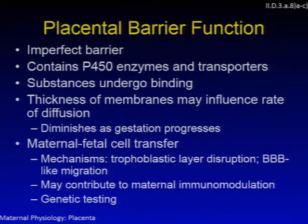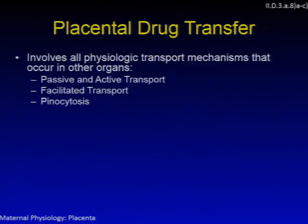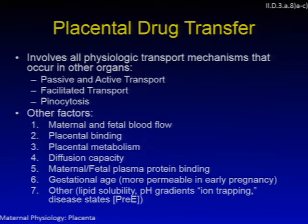Cell-free fetal DNA in maternal plasma has facilitated testing for fetal sex, fetal rhesus D blood group, fetal chromosomal aneuploidy, and other genetic abnormalities. Placental drug transfer involves passive and active transport, facilitated transport, and pinocytosis, as well as maternal and fetal blood flow, placental binding and metabolism, diffusion capacity, plasma protein binding, gestational age — as it's more permeable early — lipid solubility, pH gradients, ion trapping, and disease states like preeclampsia.